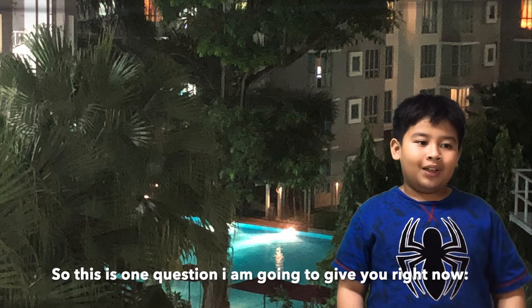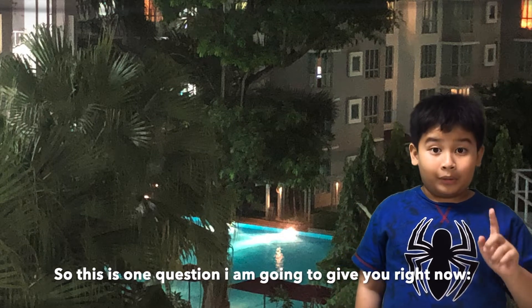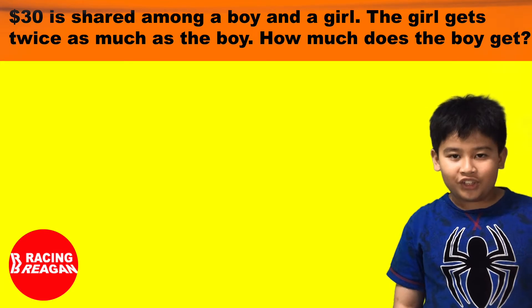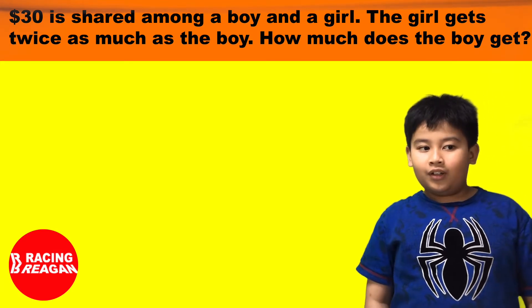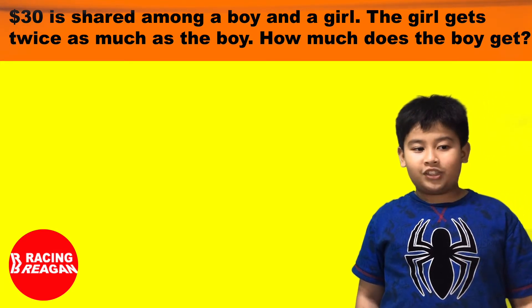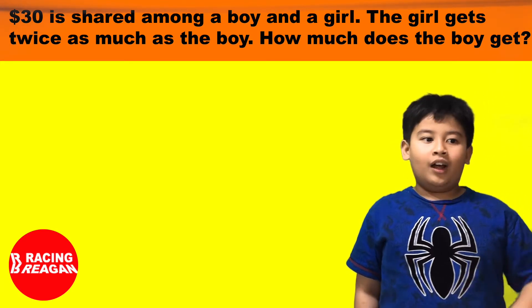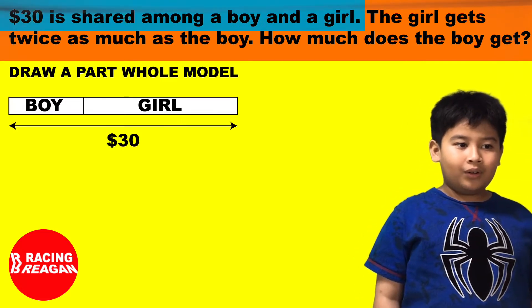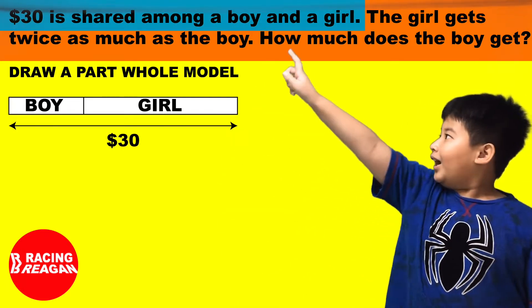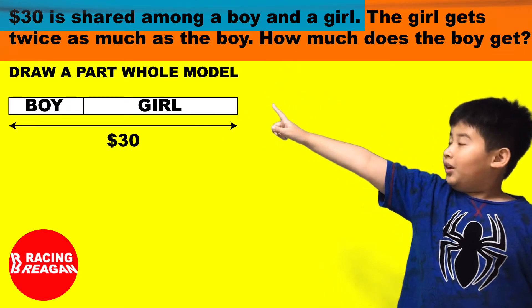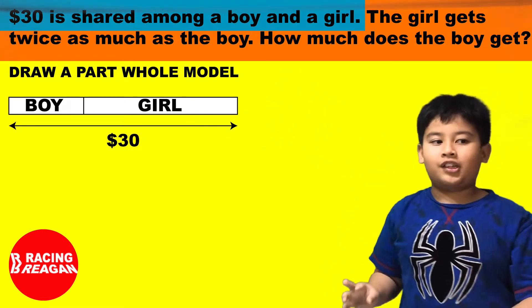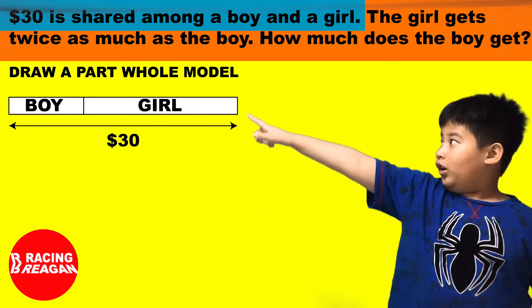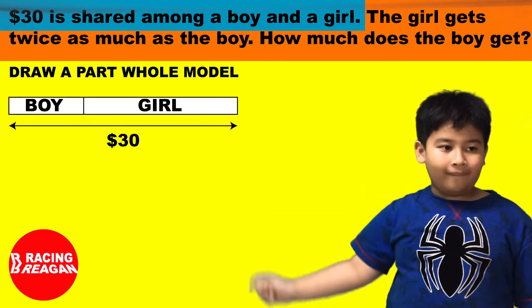Okay, so this is one question I'm going to give you right now. $30 is shared among a boy and a girl. The girl gets twice as much as the boy. How much does the boy get? So, $30 is shared among a boy and a girl means the first step you should do is draw a part-whole model.